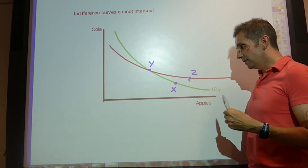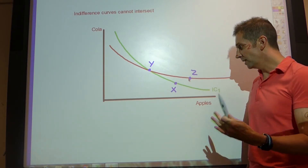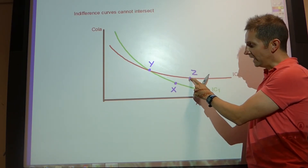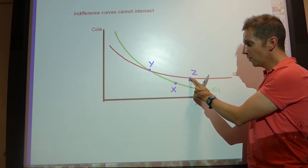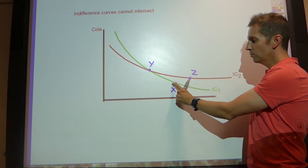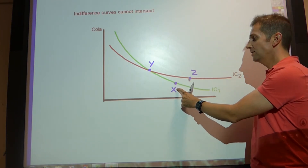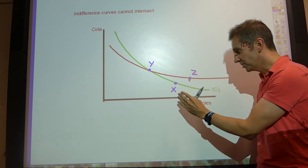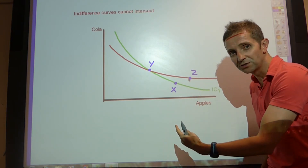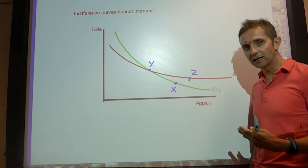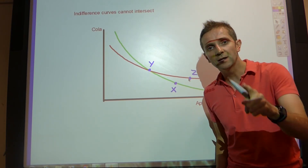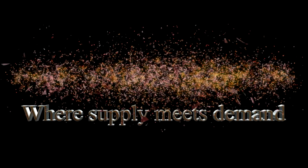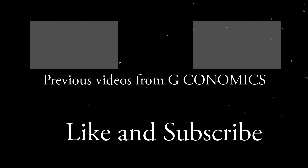However, this violates the assumption that the consumer enjoys more to less. At point Z, the consumer would be consuming more cola and more apples than at point X. This shows us that the curves cannot intersect, because if they did it would violate the assumption that consumers always enjoy consuming more to less. And that's it for this video.